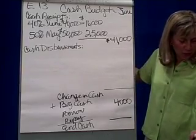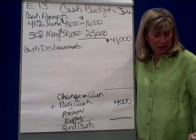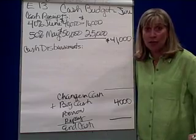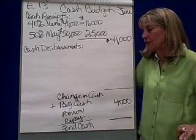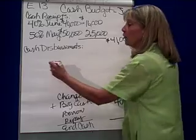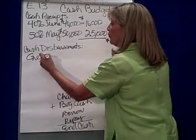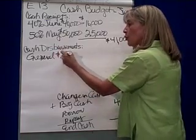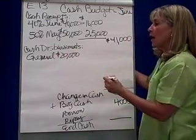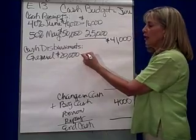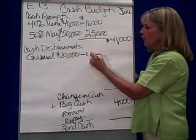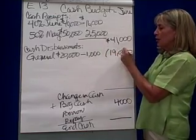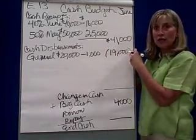Part C says general expenses budgeted for June are $20,000, but depreciation — which is a non-cash expense — represents $1,000 of this. So as far as our cash disbursements, we're going to have a disbursement for general expenses of $20,000, but we subtract $1,000 for depreciation. That means our cash outflows for general expenses are only $19,000, not $20,000.